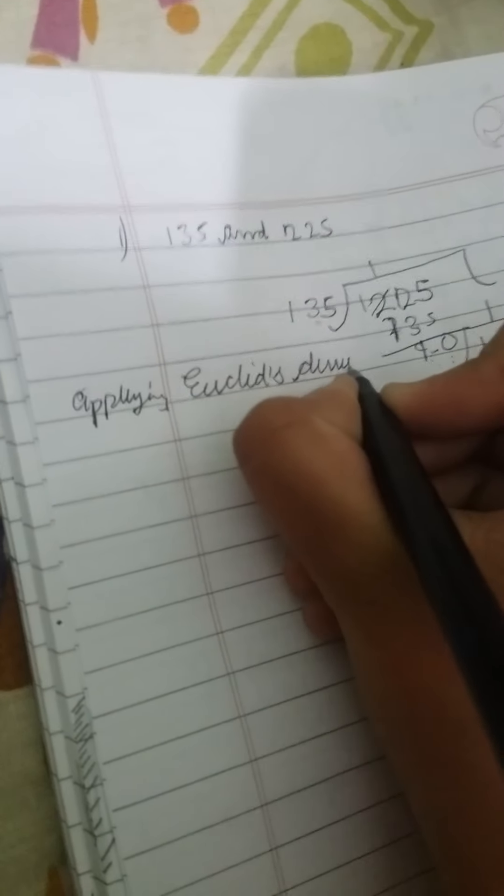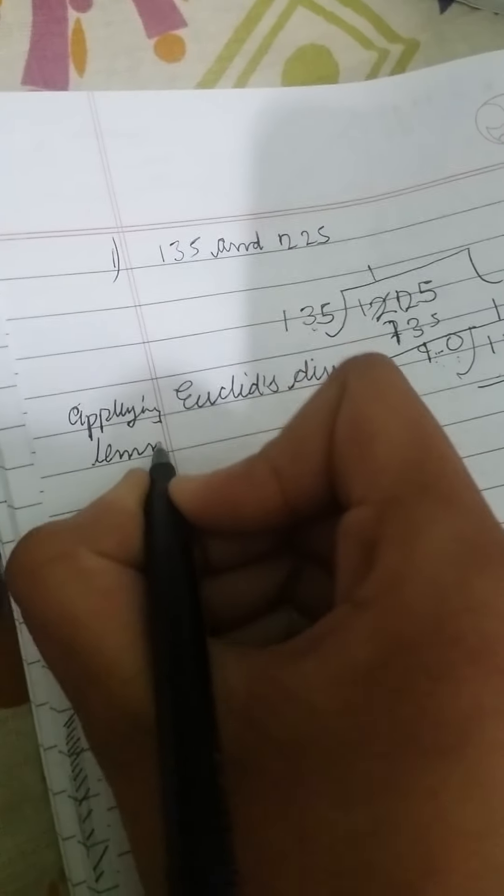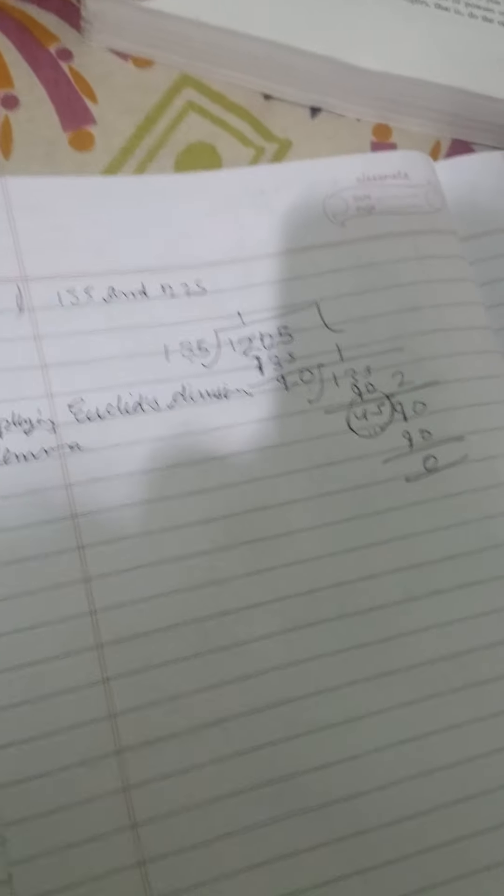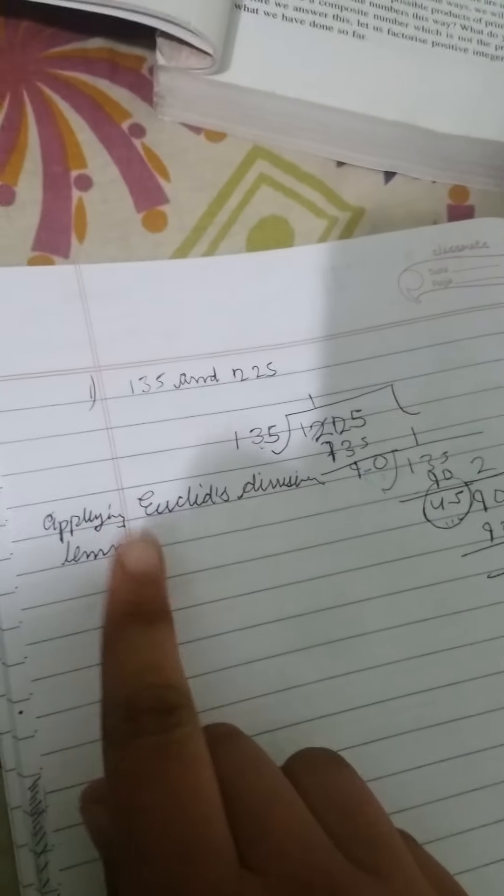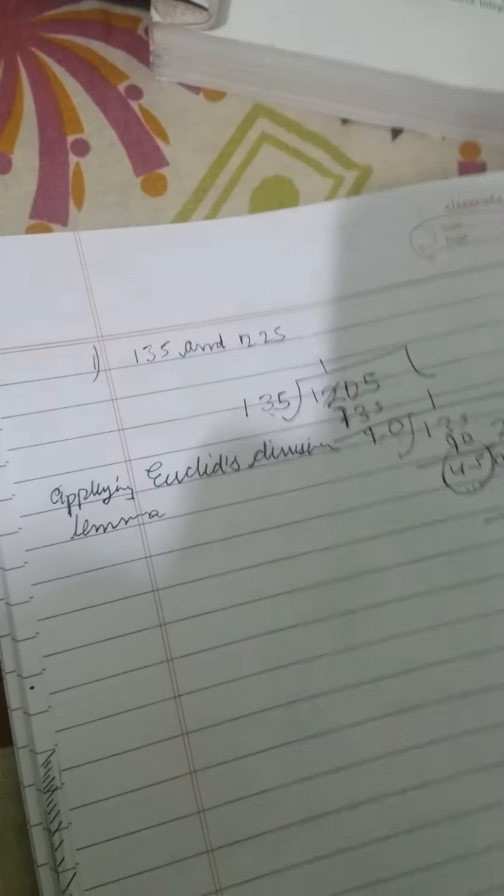There's a difference between Euclid's division lemma and Euclid's division algorithm. Algorithm is a series of well-defined steps.